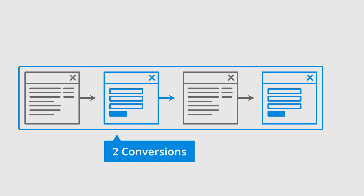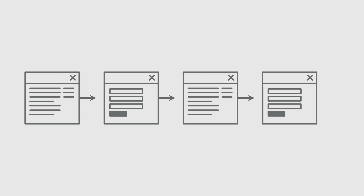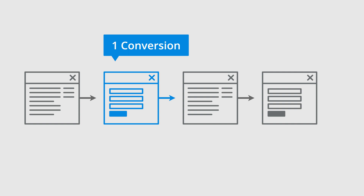This is different to how goals worked in the previous version of Google Analytics. In Universal Analytics, a goal would only be counted once per session. Looking at our example again, this would mean that the first time the form is completed, a conversion would be counted. But when the form is completed a second time, an additional conversion isn't counted.